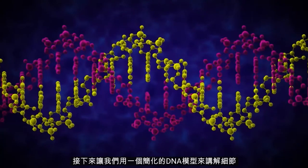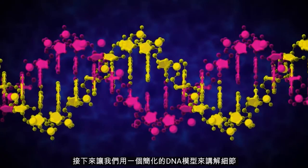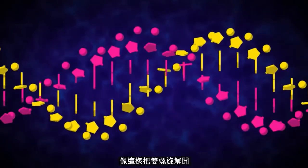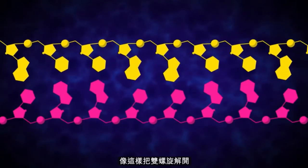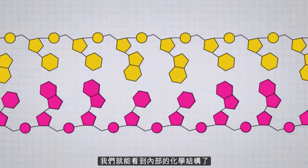Now, let's move to a more simplified representation of DNA to discuss the details. We can unwind the double helix like this, so that we can see the chemical structure inside.